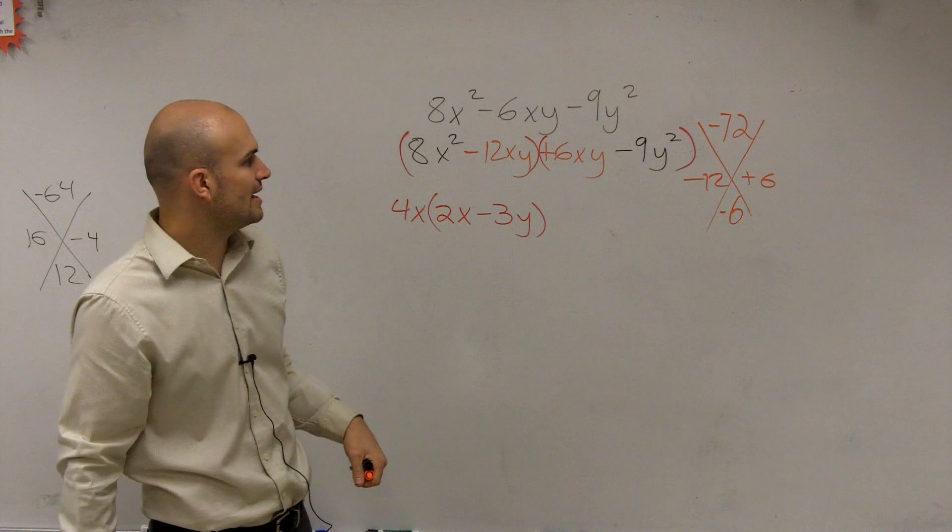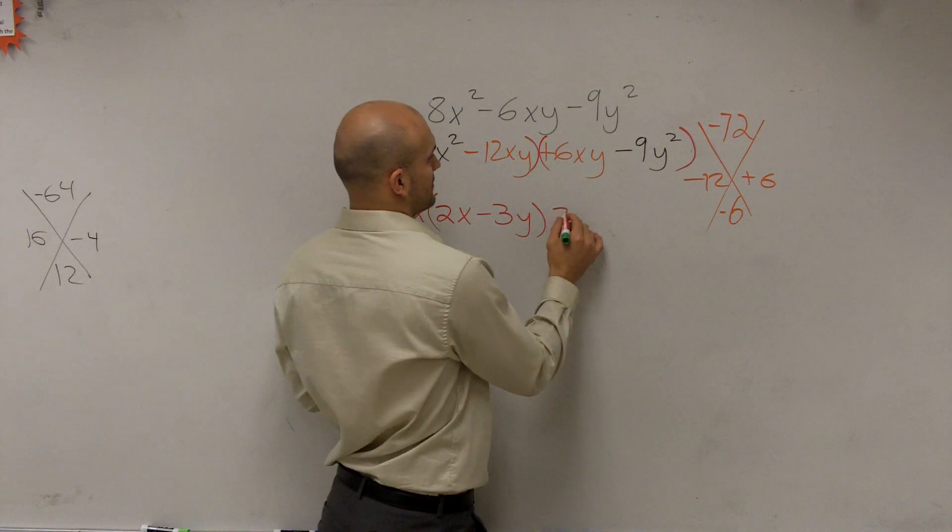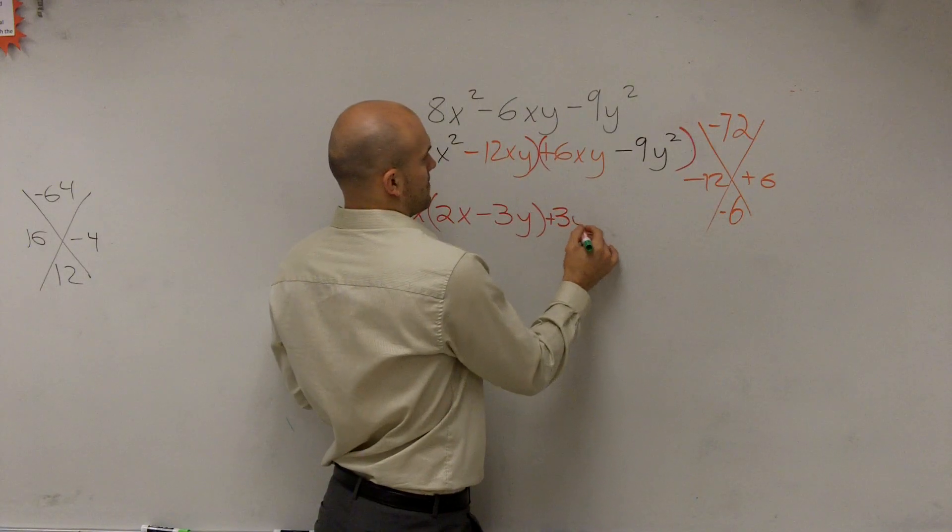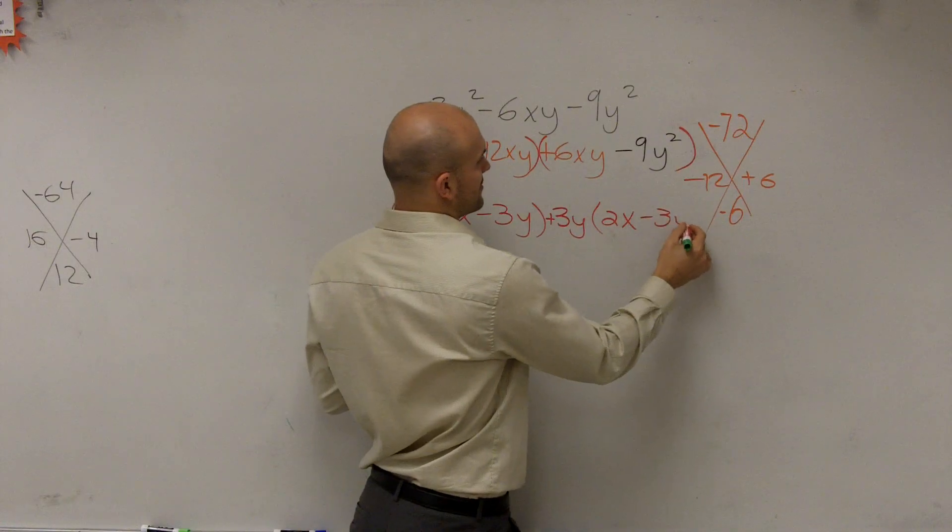Here, I say, what can I take out? And I can say I can factor out a 3y. And when I factor out a 3y, I'm left with a 2x minus 3y.